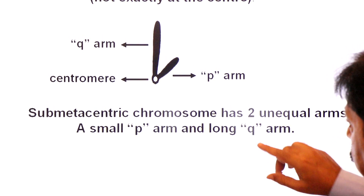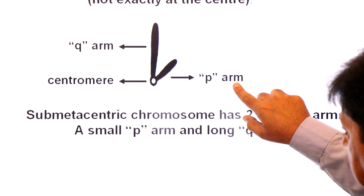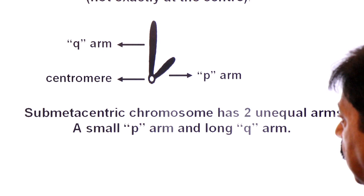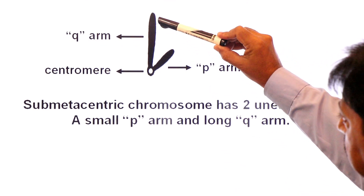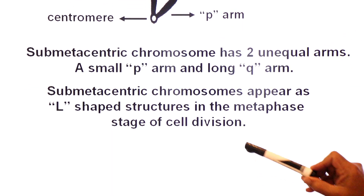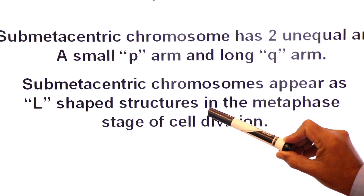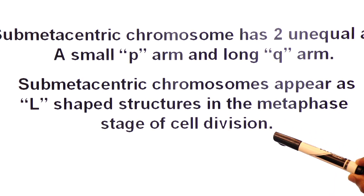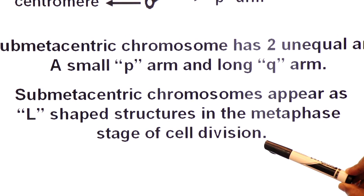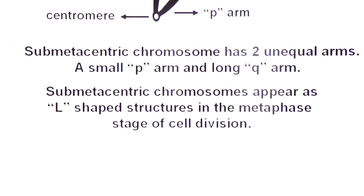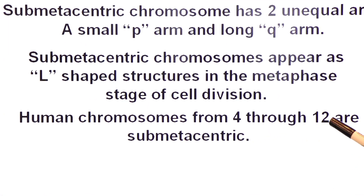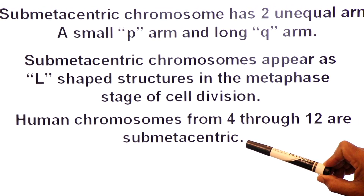The submetacentric chromosome has one shorter arm, which is the p-arm, and one longer arm, which is the q-arm. Because of this unequal division, the submetacentric chromosome appears as an L-shaped structure in the metaphase stage of cell division. Examples from the human karyotype: human chromosomes 4 through 12 are submetacentric chromosomes.